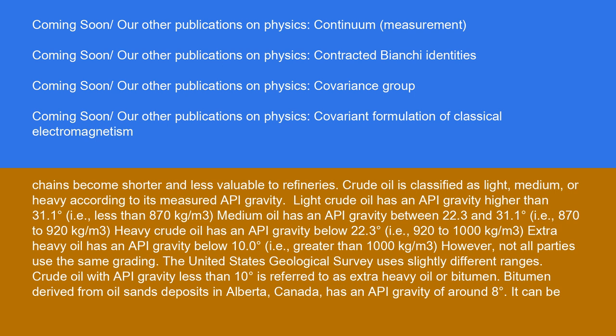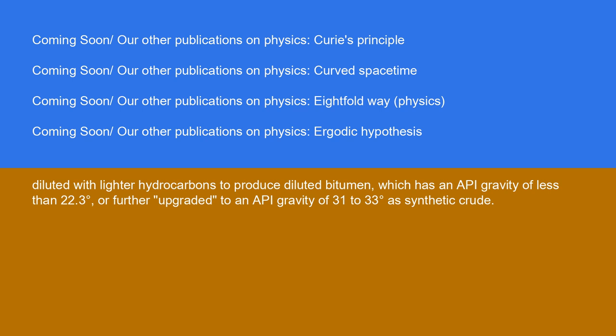Bitumen derived from oil sands deposits in Alberta, Canada, has an API gravity of around 8 degrees. It can be diluted with lighter hydrocarbons to produce diluted bitumen, which has an API gravity of less than 22.3 degrees, or further upgraded to an API gravity of 31 to 33 degrees as synthetic crude.